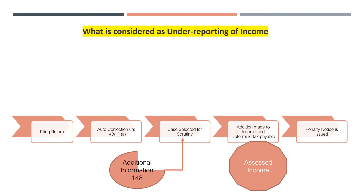Once the assessment order is passed, the officer issues a penalty notice under section 278. Subsequently, the underreporting of income has to be decided after considering what is not treated as underreporting of income, which is discussed separately. The underreported income here means your assessed income which is more than your processed income under section 143.1a — meaning there is a certain addition which has been done.